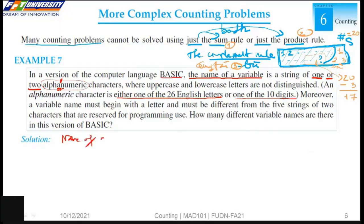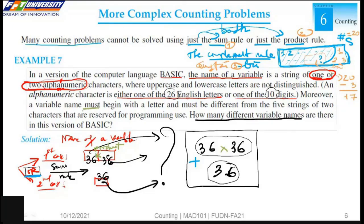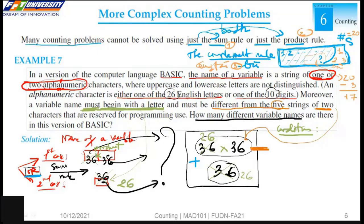This is the name of the variable in BASIC. In the first case, we have the length of 2, and in the second case, we have the length of just 1. How many options? We have to focus on the condition. Because we must begin with a letter, here we have just 26. And here, similarly, we have 26 letters. The second condition is it must be different from the five strings of two characters. So we have to subtract 5. So the solution is...